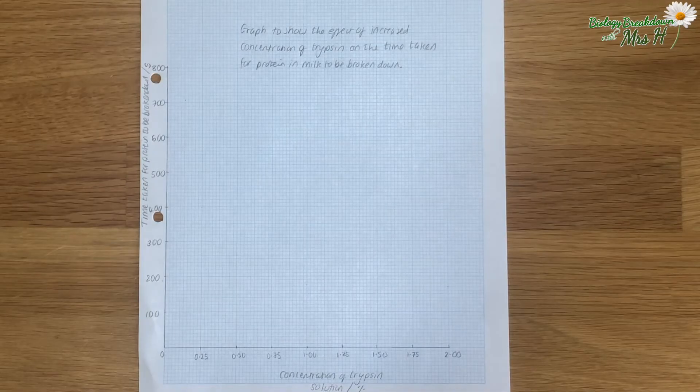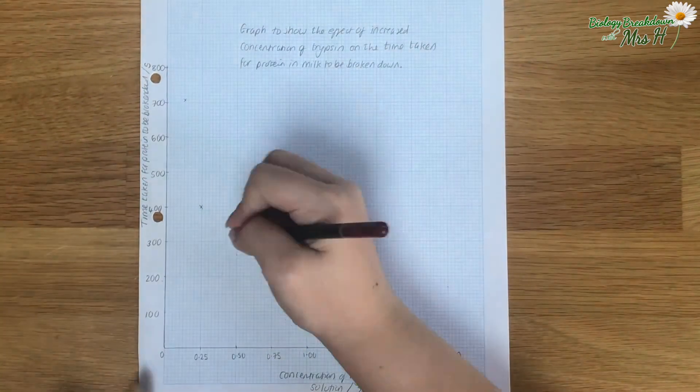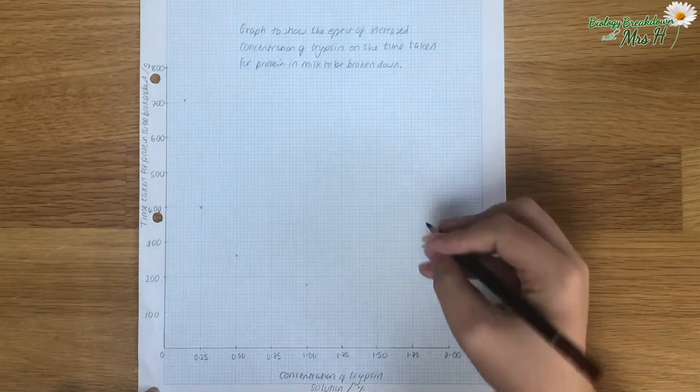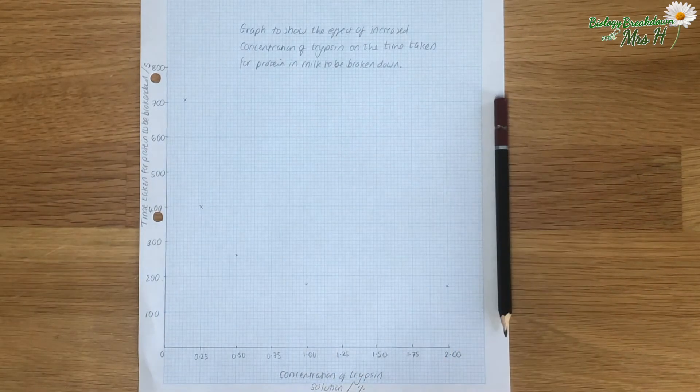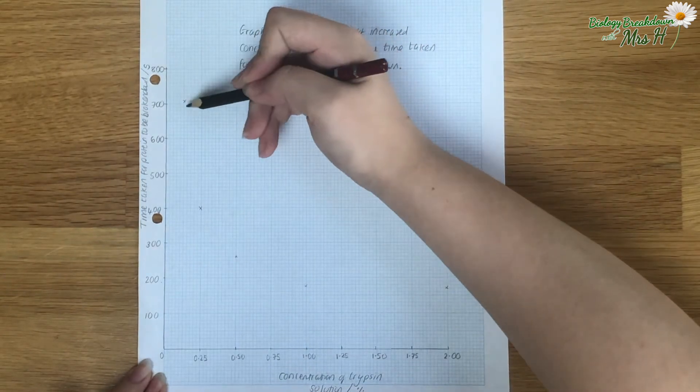Remember you need to make sure the axes are labelled and that you've used a sensible scale. Use a sharp pencil, absolutely no pen whatsoever. No, not even for the title and don't forget to give your graph a title by the way but it must be in pencil.